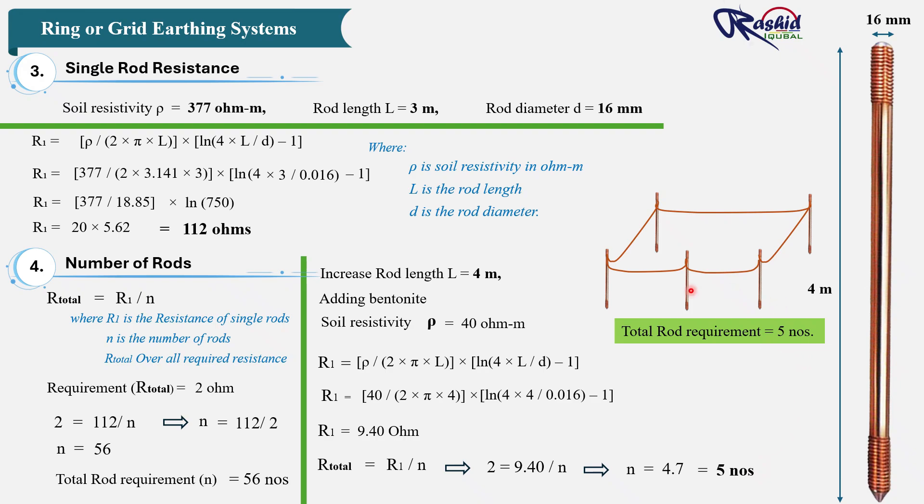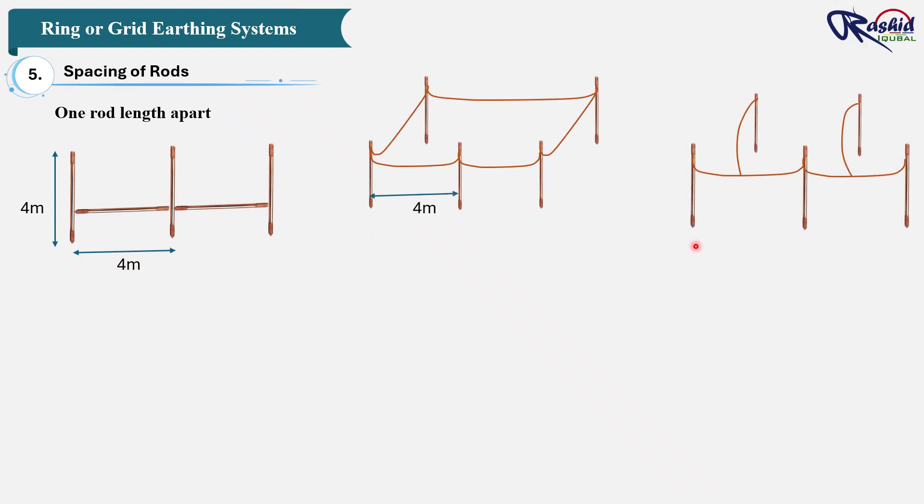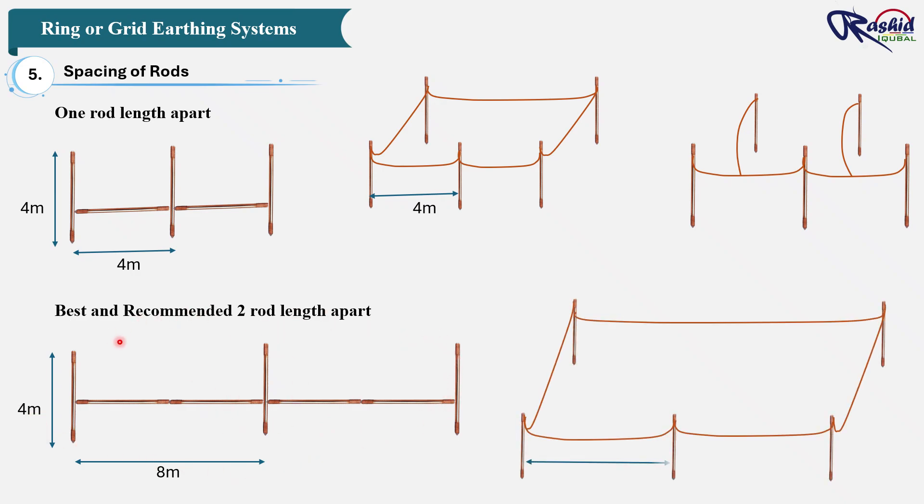Once we find out the number of rods, then the question arises here: what distance should be maintained between rods? That's why we will learn here spacing of rods. To minimize mutual resistance, rods should be spaced at least one rod length apart. And if space allows, there is sufficient space, then twice the rod length is even better. This proper spacing ensures that each rod works effectively without overlapping electrical fields, giving us better overall performance of the earthing system. For 4 meter rods, use spacing of 4 to 8 meters between rods around the building perimeter.